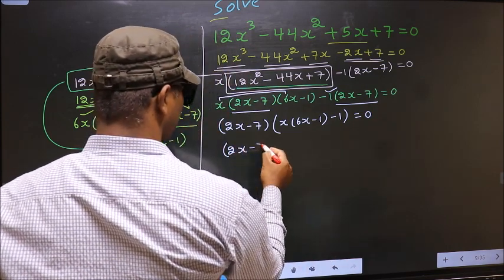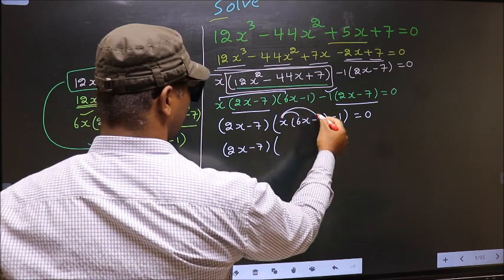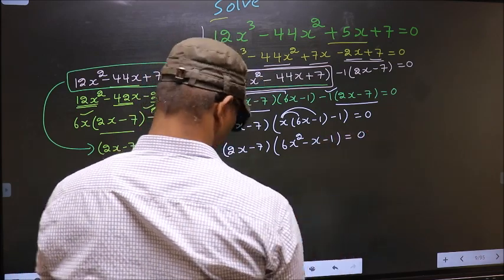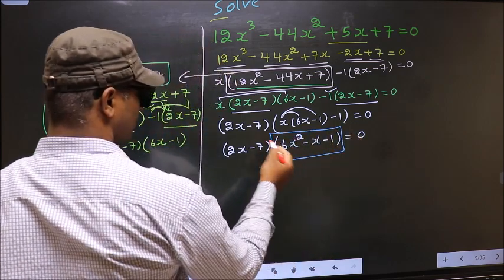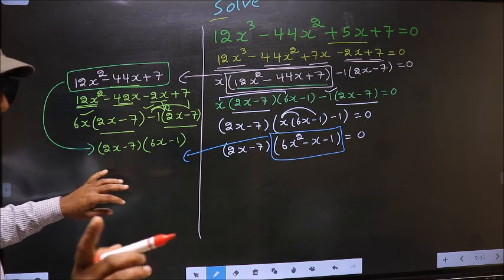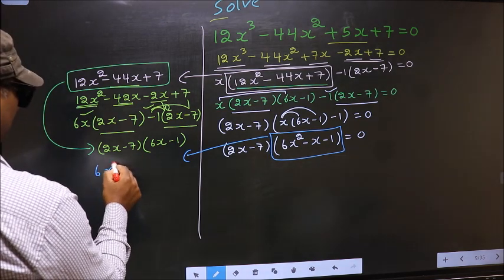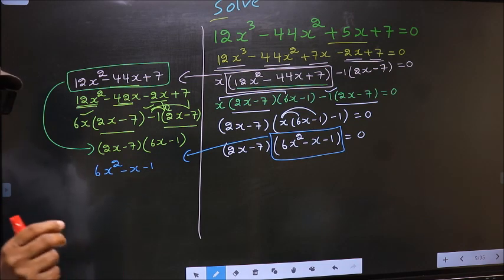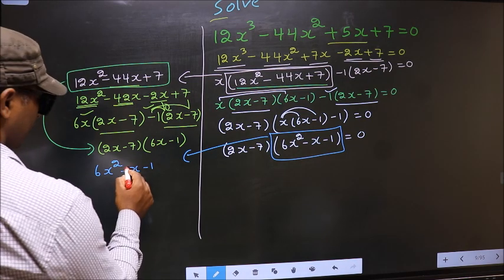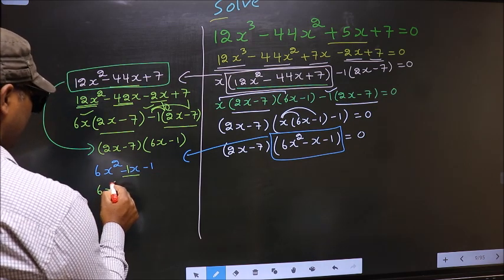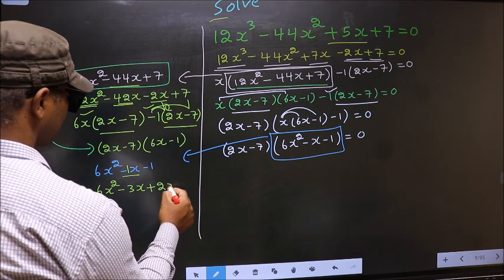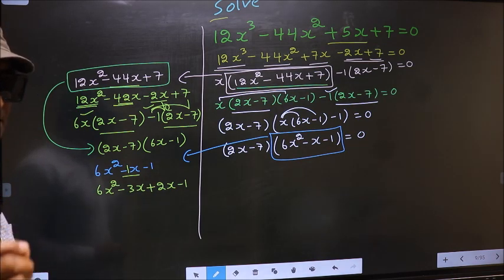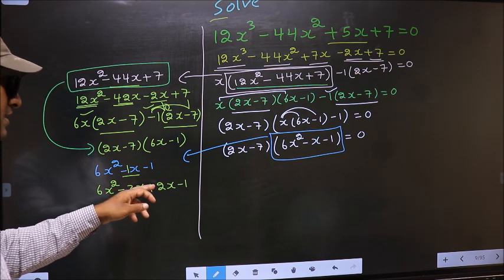Now we have come across another quadratic, so I will factorize 6x² minus x minus 1. To factorize this we should split the middle term, that is minus x. So in place of minus x, now I write minus 3x plus 2x minus 1. Directly I have split minus x into minus 3x plus 2x.